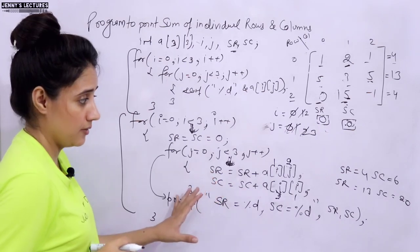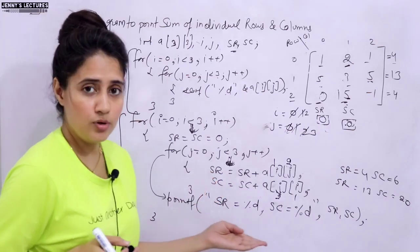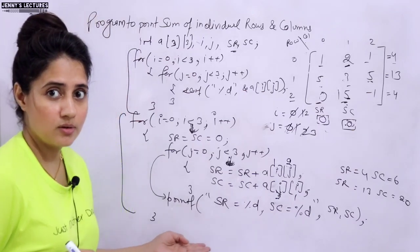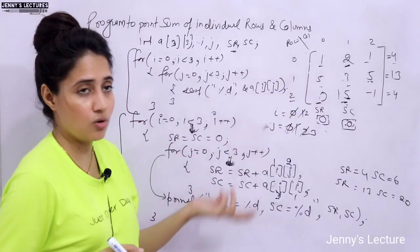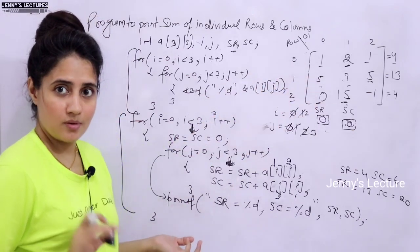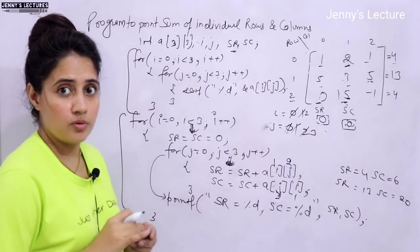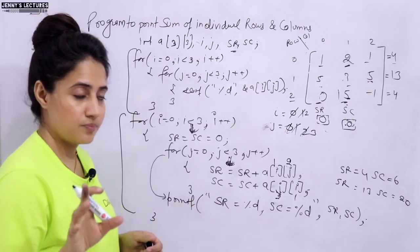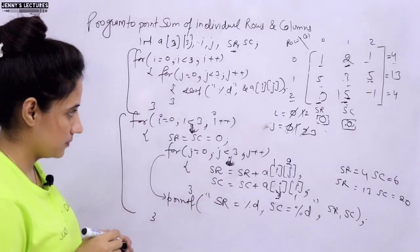I hope you can dry run the third row at your own. The logic for sum of individual rows and columns should now be clear. Now let me show you the output on my screen with a practical demonstration.